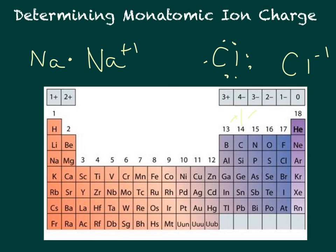If you're keeping a periodic table, I recommend writing down the charges. Above Group 1A write plus one, above 2A write plus two, above 3A write plus three, above 4A write plus or minus four. Then counting backwards: above 5A write negative three, 6A negative two, 7A negative one, and 8A is zero.